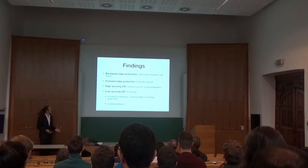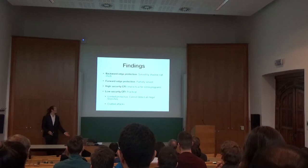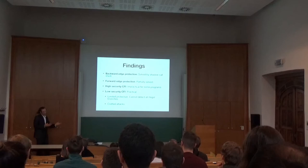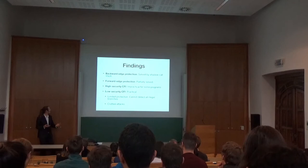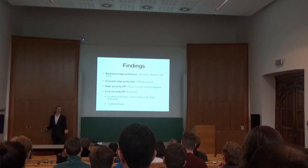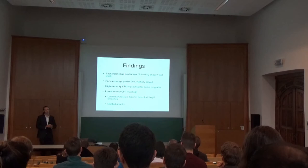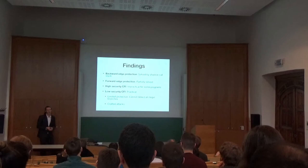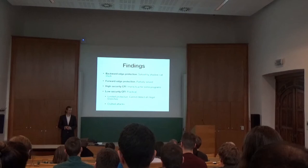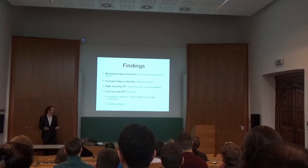Our main findings were that backward edge protection is pretty much solved using a shadow call stack — many different architectures rely upon one. Forward edge protection is not fully solved; we argue it's only partially solved. You can classify forward edge protection as either high-security or low-security. High-security means fine-grained architectures, but we argue it's impractical for some programs because it's difficult to analyze programs with function pointers to build control flow graphs. Low-security CFI is practical because it doesn't rely on control flow graphs. However, it provides limited protection since it cannot detect all invalid branches, and if an attacker knows the policy employed, they can craft an attack to circumvent the security of these architectures.